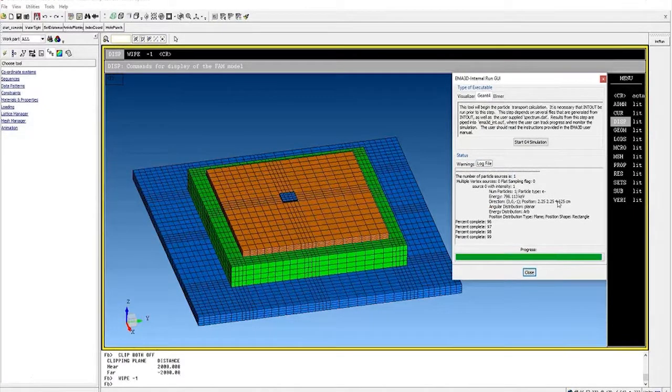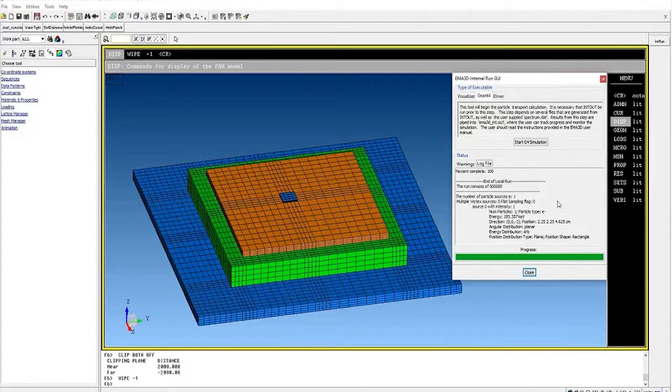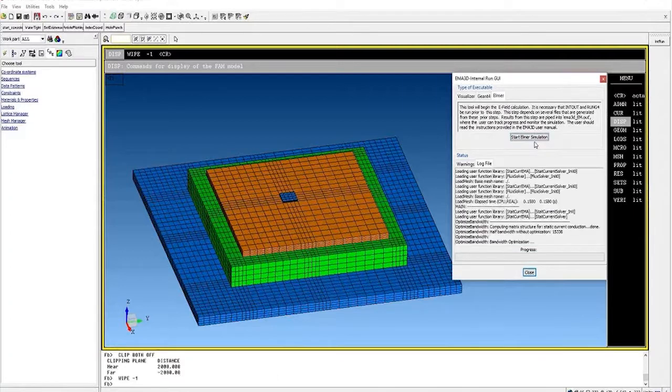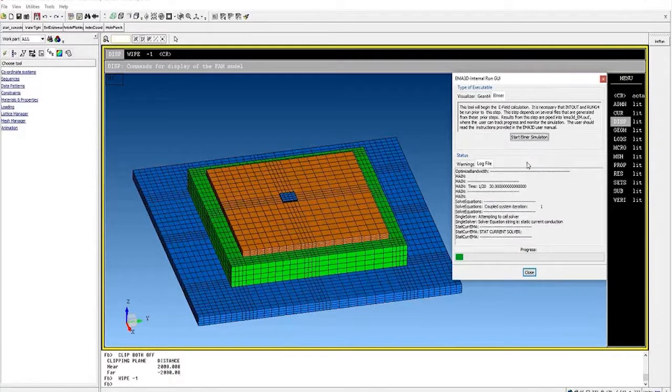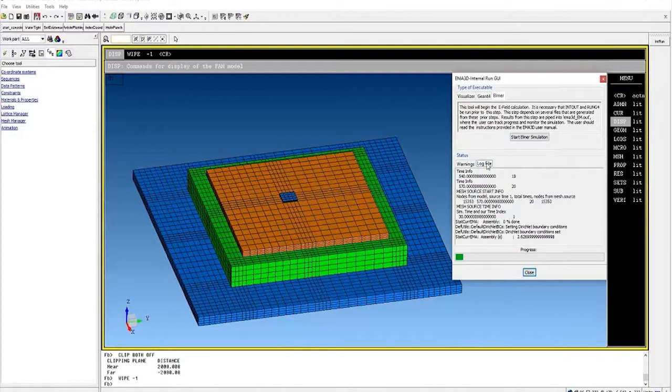So, it completed without any errors or without any issues. So, we can move on to the Elmer simulation, which is a quasi-electrostatic solver. So, go to the next tab, and then you can just click start Elmer simulation. Same thing. It will output a log file. This is also being written to a file within that folder I showed earlier. You can see warnings or errors that pop up. Once again, don't see anything here.